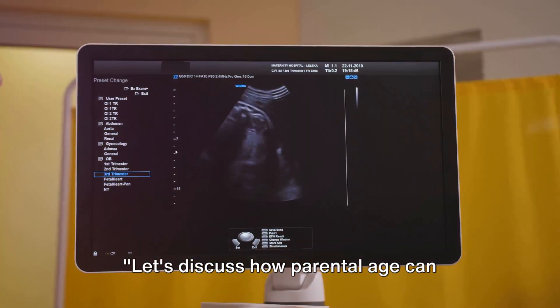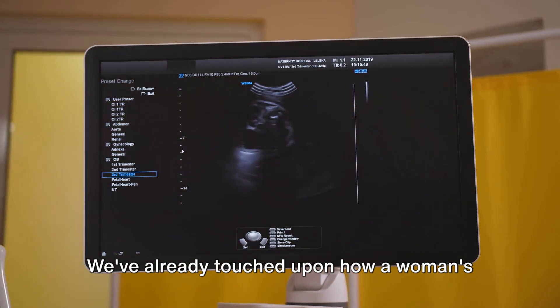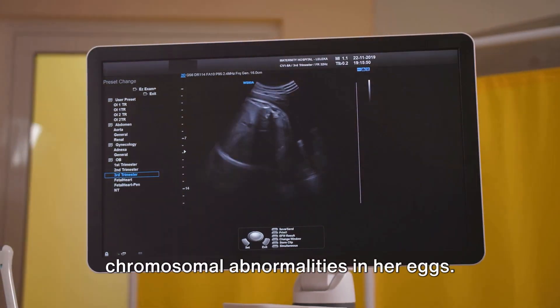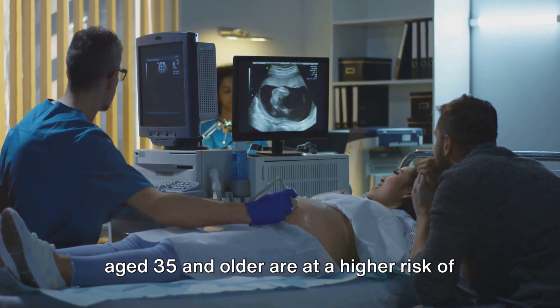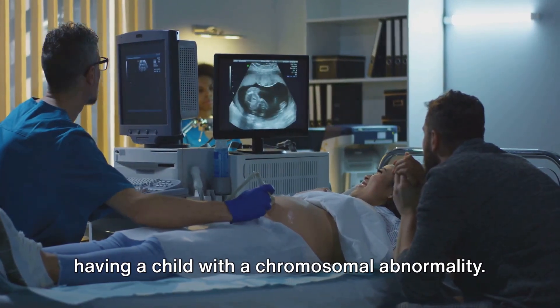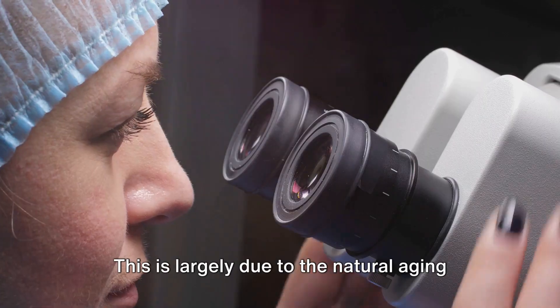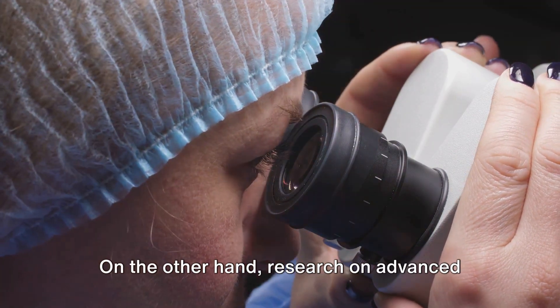Let's discuss how parental age can affect the risk of chromosomal abnormalities. We've already touched upon how a woman's age can increase the likelihood of chromosomal abnormalities in her eggs. But it's important to note that women age 35 and older are at a higher risk of having a child with a chromosomal abnormality. This is largely due to the natural aging process and the degradation of egg quality over time.